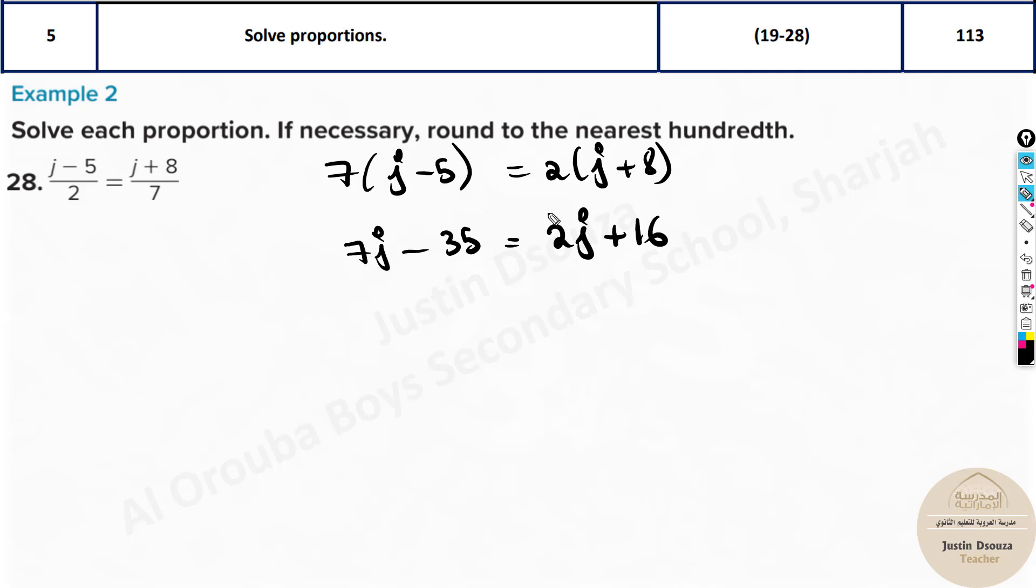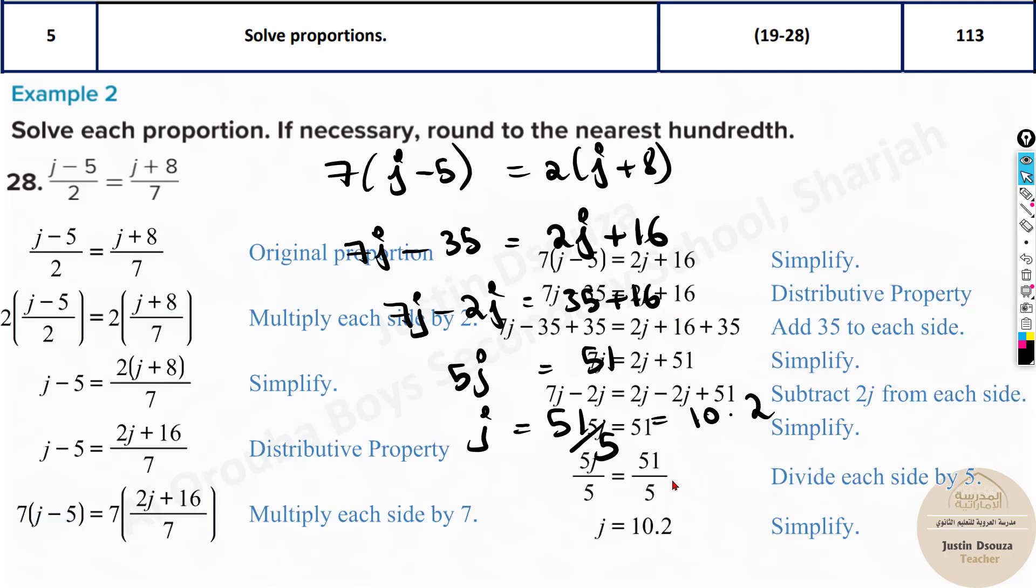Leave the 7j over here. Take the smaller j to the other side, minus 2j. That equals 35 plus 16. And 35 plus 16 would be 51. And over here we would have 5j. j equals 51 by 5, that would be 10.2. Let's check. Yeah, that's the answer.